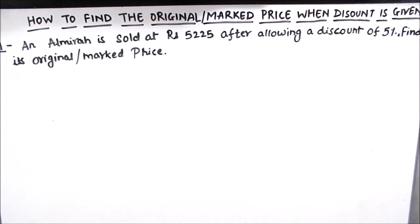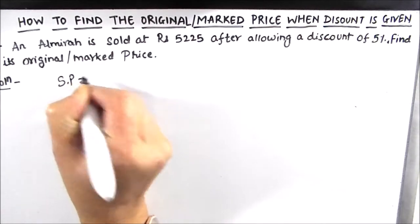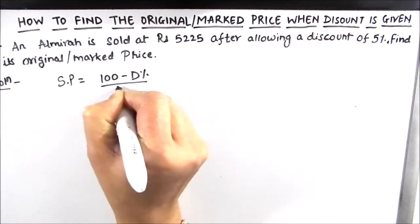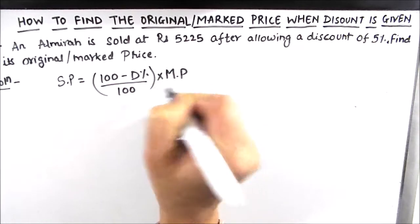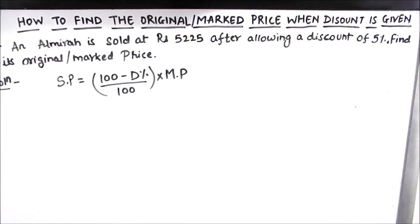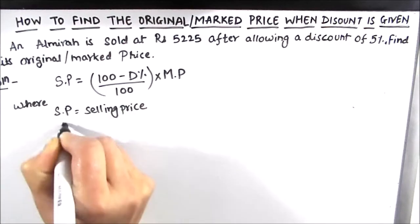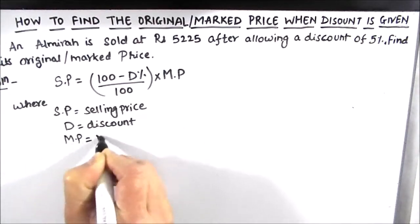The first question is: an almira is sold at rupees 5225 after allowing a discount of 5 percent — find its original or marked price. The formula we are going to use is: selling price is equal to (100 minus discount percentage) divided by 100, times marked price. Here SP is the selling price, D is the discount, and MP is the marked price.